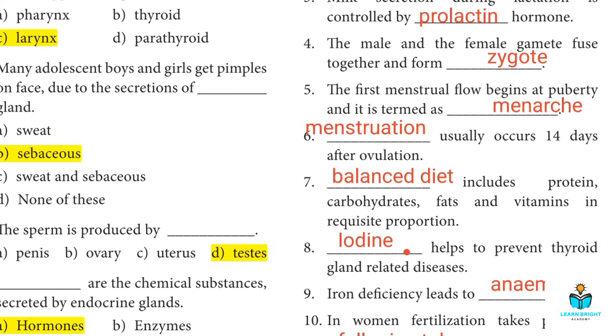Seventh fill-in-the-blank: This includes protein, carbohydrates, fats and vitamins in requisite proportion. Answer: Balanced diet.